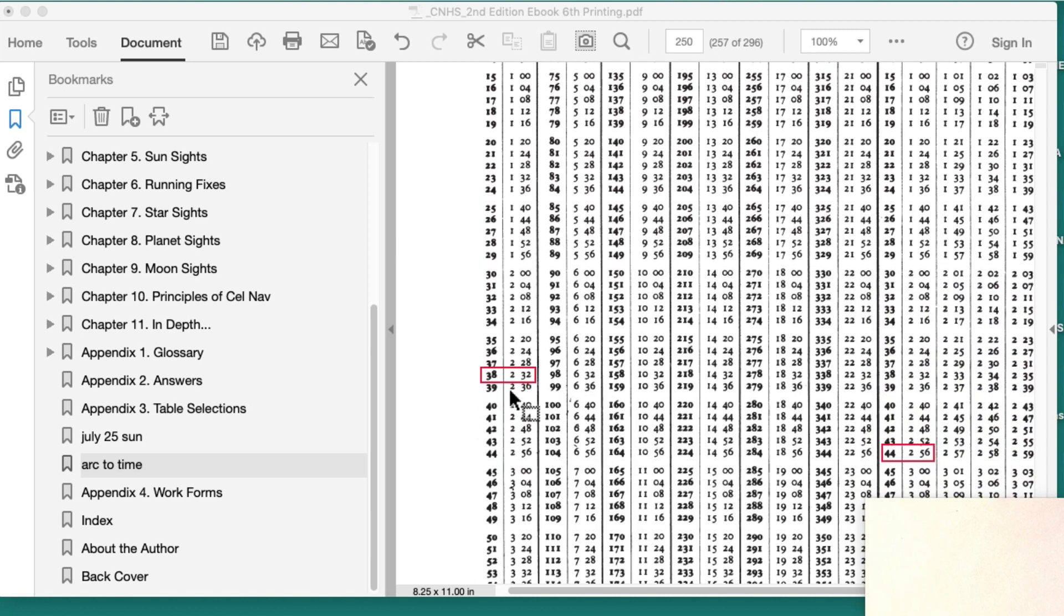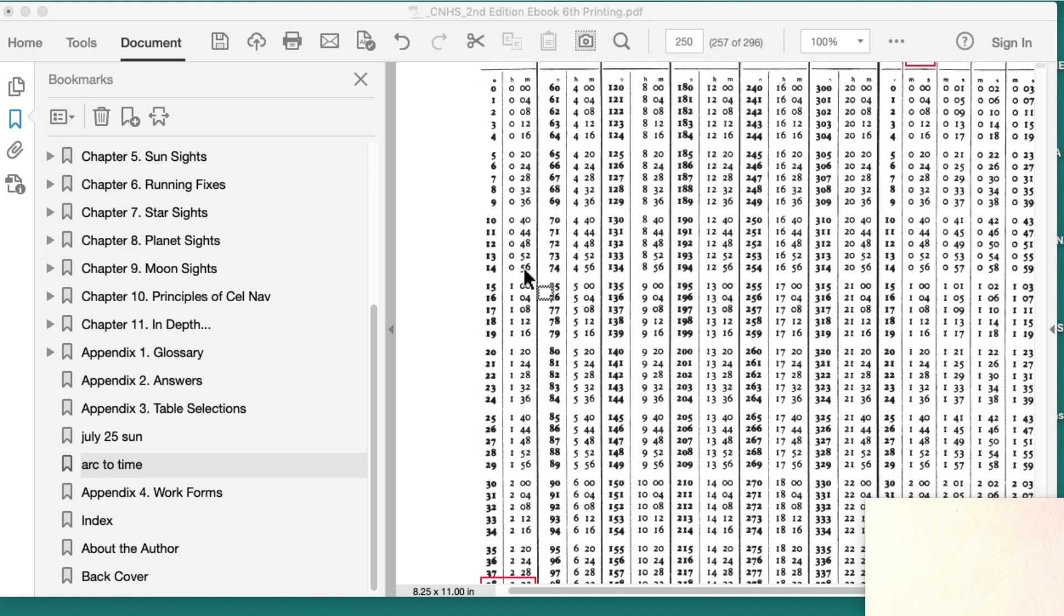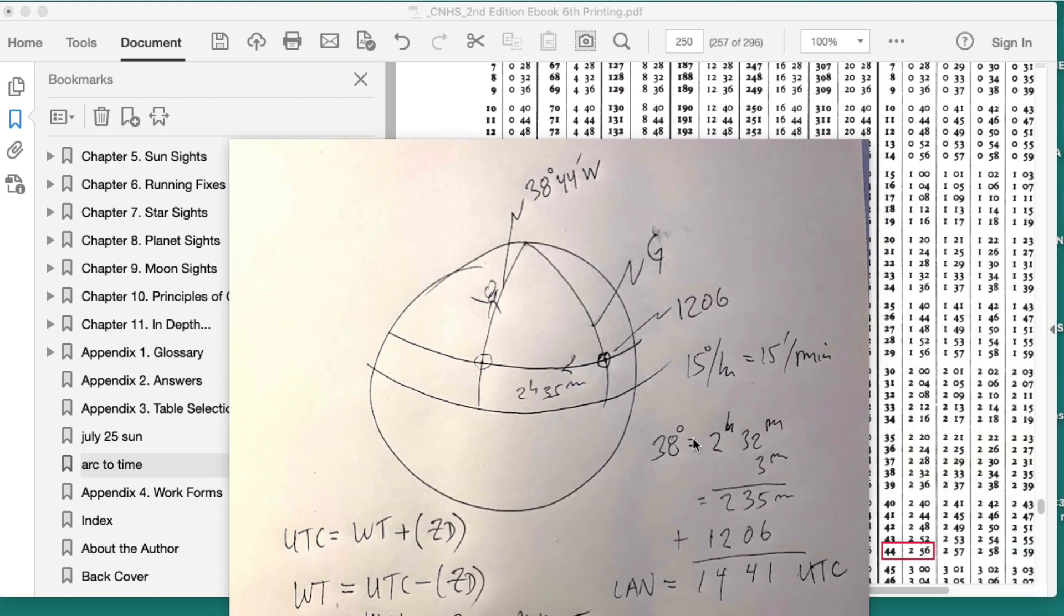Here's the arc to time table in the book, it's our table T7 in the back of our book. It's 38 degrees. This is the heading of the table, zero to 59 going down this column. There's 38, that's 2 hours 32 minutes.